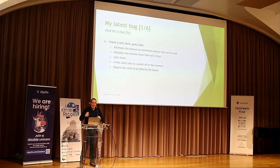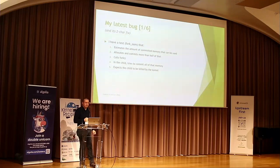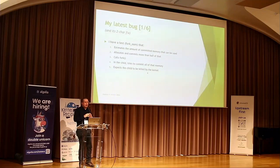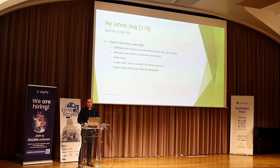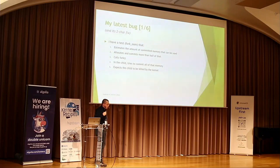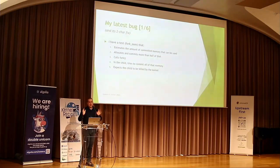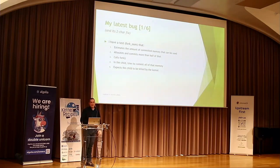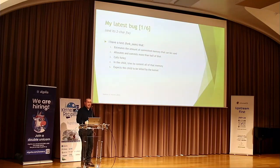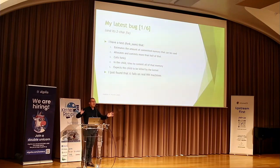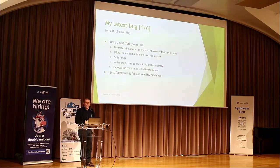I recently introduced a test for a feature I'd had for a long time but without a proper test. The test estimates the amount of committable memory empirically, allocates and commits more than half of that memory, then calls fork. The child then tries to commit all of that memory and expects to be killed by the kernel. I know the whole out-of-memory killer story and heuristics, but this is not Linux — it's a small embedded system. For now it's either zero overcommit or infinite overcommit.